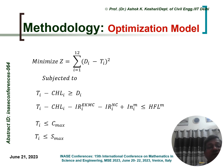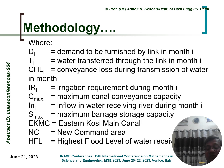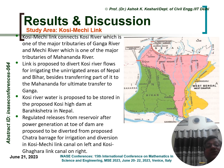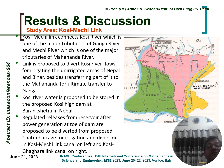The model is solved for different years on a monthly basis. The application is shown for the Kosi-Mechi link: Kosi river connects to Mechi river, fulfilling demand in the state of Bihar. The link connects Kosi river — a major tributary of Ganga — and Mechi river — a major tributary of Mahananda. The link is proposed to divert Kosi river flows for irrigating unaggregated areas of Nepal and Bihar, besides transferring part of the flow to the Mahananda for ultimate transfer to Ganga.